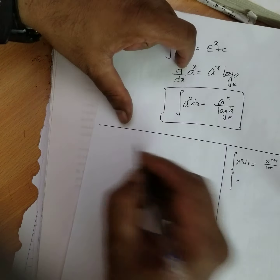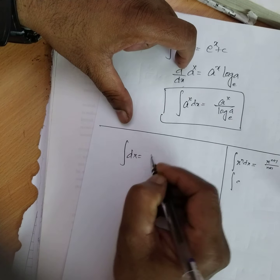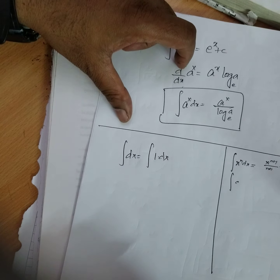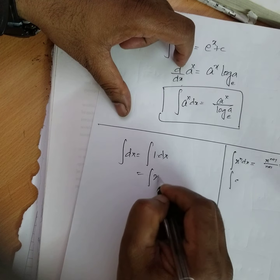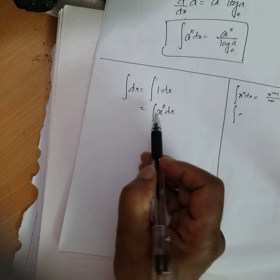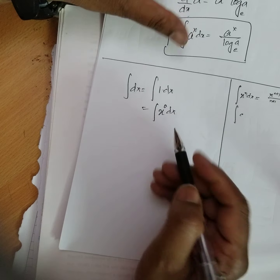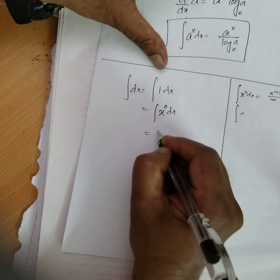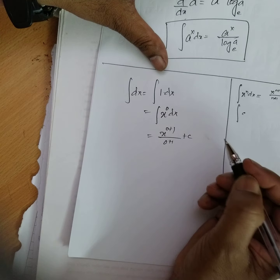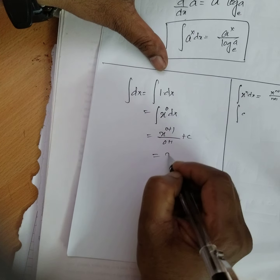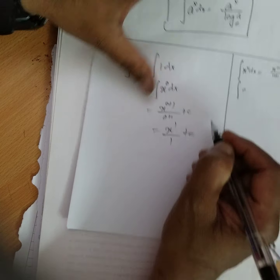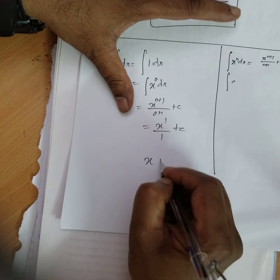Integration of dx equals 1 dx, which is x to the power of 0 dx — since anything to the power of 0 is 1. Applying the formula gives x to the power of 1 by 1, which equals x plus c.